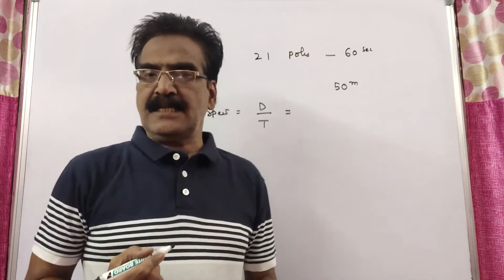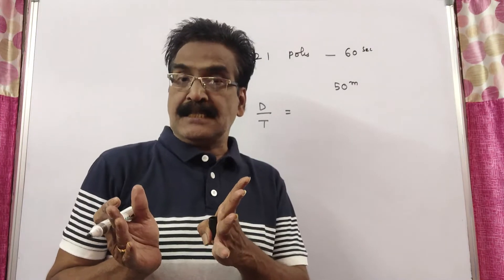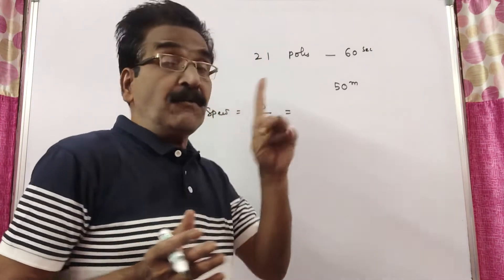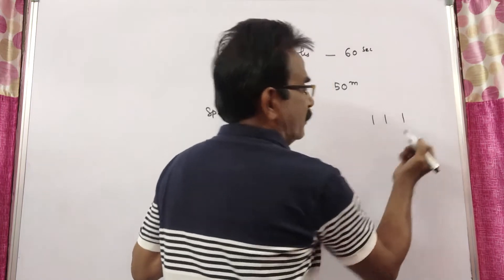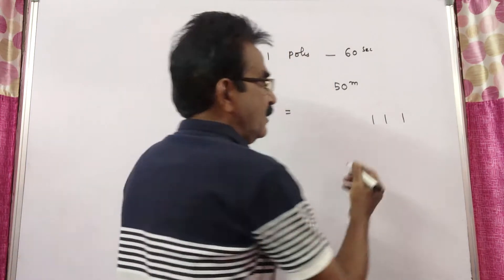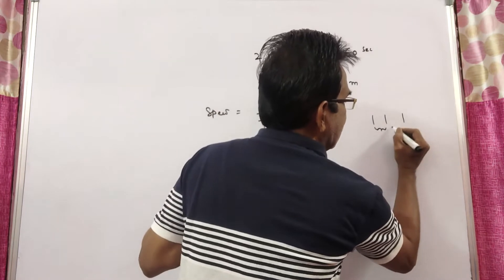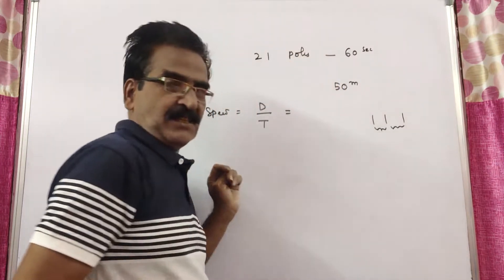Here distance. Friends, the man notices 21 poles. See friends, if there are 3 poles, how many distances can he cover? 2 distances.